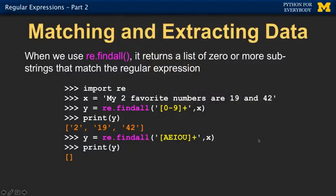It returns zero or more things. For example, if we ask for one or more uppercase vowels — A, E, I, O, U — and none are found in the string, we get back nothing, an empty list. So you do have to check how many things you got back, because you might get zero, one, or even 25 things back from a particular regular expression on a given line.